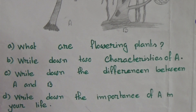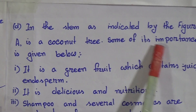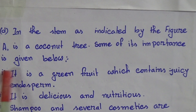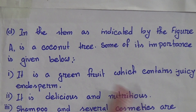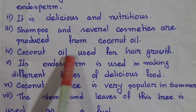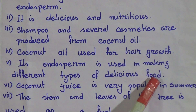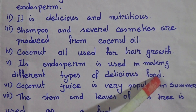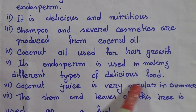Question D: Write down the importance of A — the coconut tree — in your life. One: it is a green fruit which contains juicy endosperm. Two: it is delicious and nutritious. Three: shampoo and several cosmetics are produced from coconut oil. Four: coconut oil is used for hair growth. Five: its endosperm is used in making different types of delicious food. Six: coconut juice is very popular in summer.